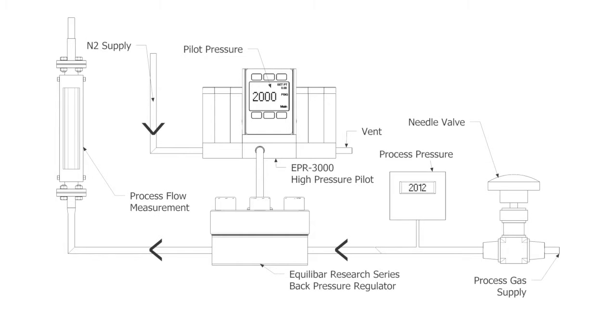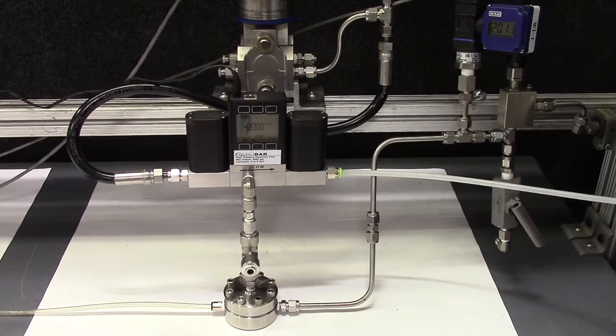We will demonstrate precise pressure control on the process WIKA sensor as we change the set point to the EPR3000 High Pressure Pilot and as we vary the process gas flow rate. Here we have the pilot connected to a research series H3P1.